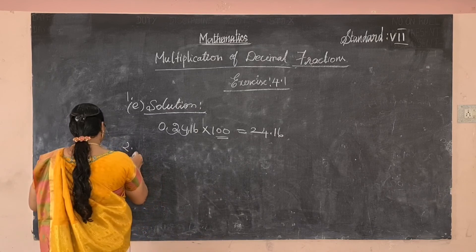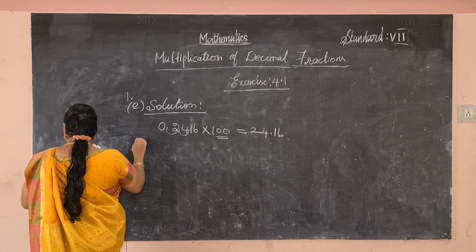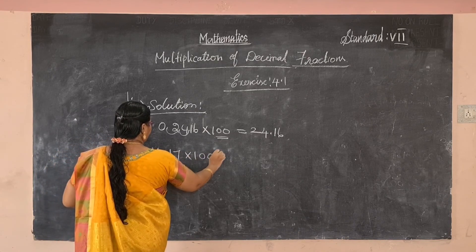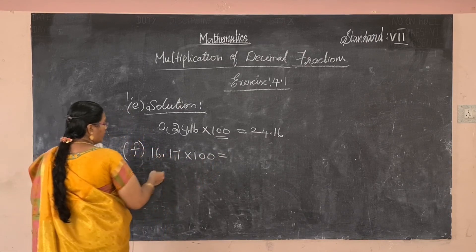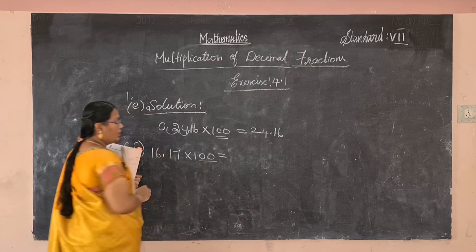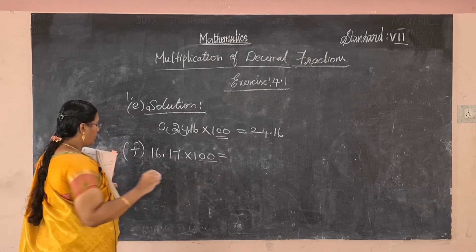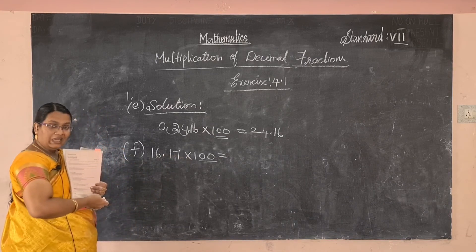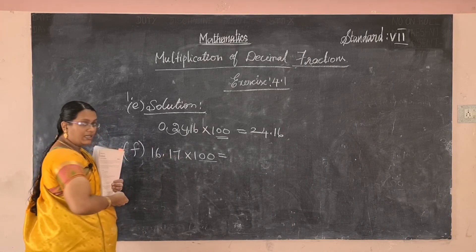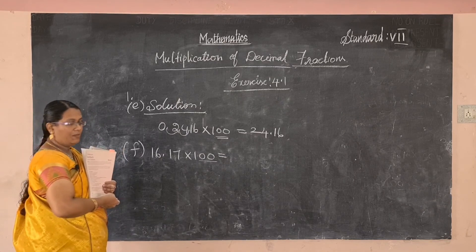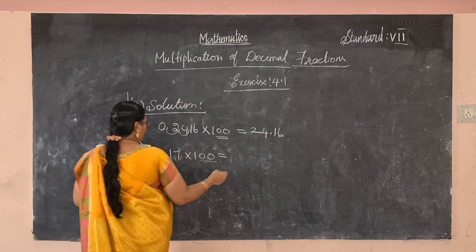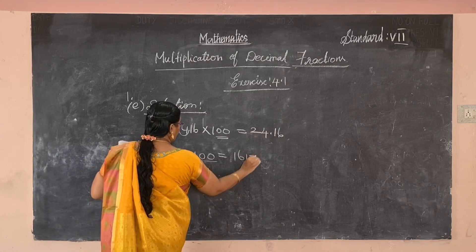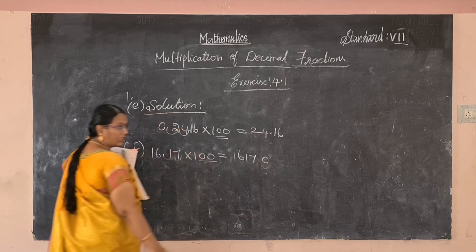Problem F: 16.17 into 100. How many zeros? Two zeros. The decimal point shifts to the right side by two decimal places: one, two. The answer is 1617.